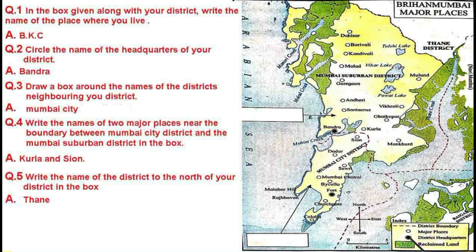This black dotted line indicates the district headquarters. The first headquarter is in Bandra and the other is in Fort. This green color box indicates reclaimed land, as you can see over here. The most important element is the direction shown here — upward is North, downward is South, here is West and East. So the map always shows these two things: the index and the direction.